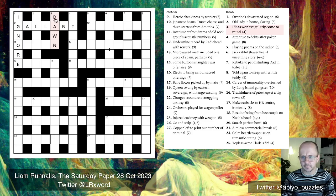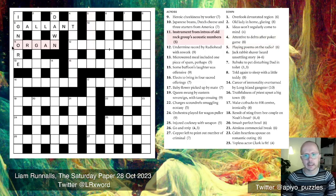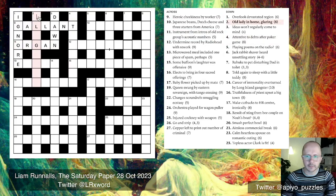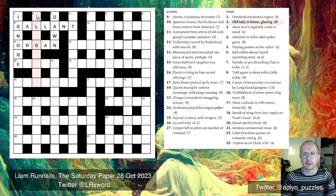11-across is very gettable: 'instrument from intros of old rock groups acoustic numbers.' This one writes itself as ORGAN — an instrument is an organ, and the introductory letters of 'old rock groups acoustic numbers' spell O-R-G-A-N. I should try to reflect on surface readings more — often they're quite funny or topical, and Liam pays particular attention to making them fun.